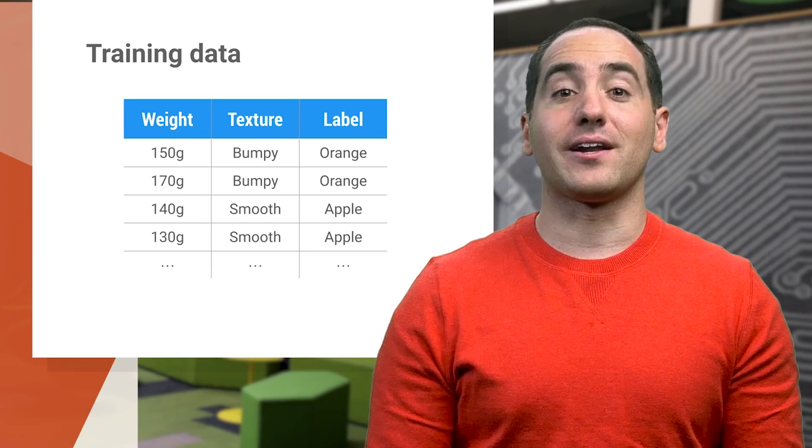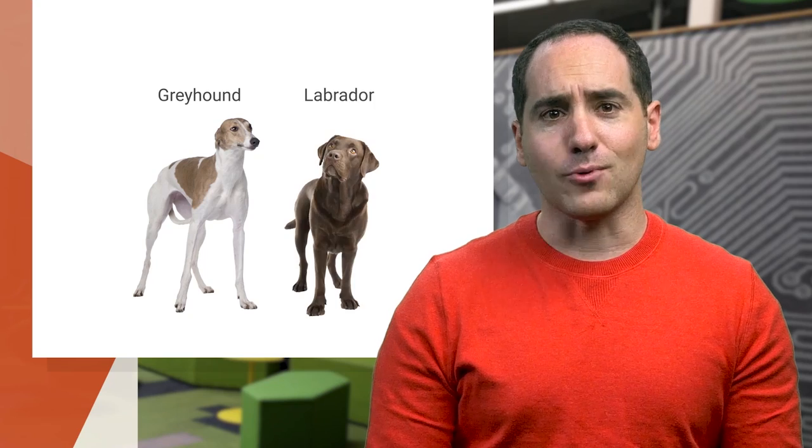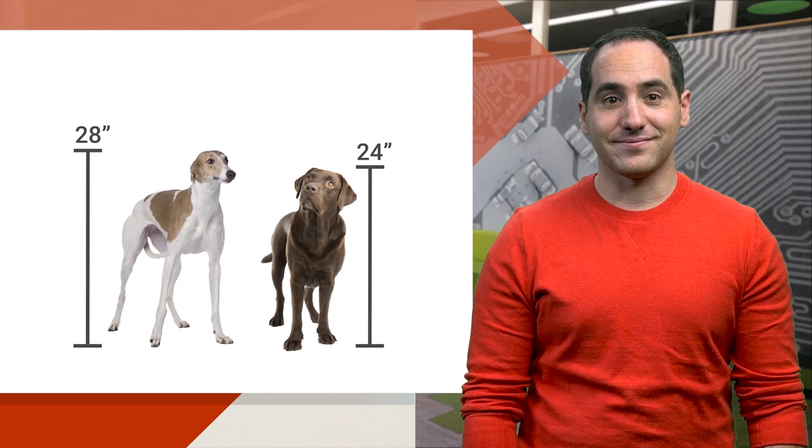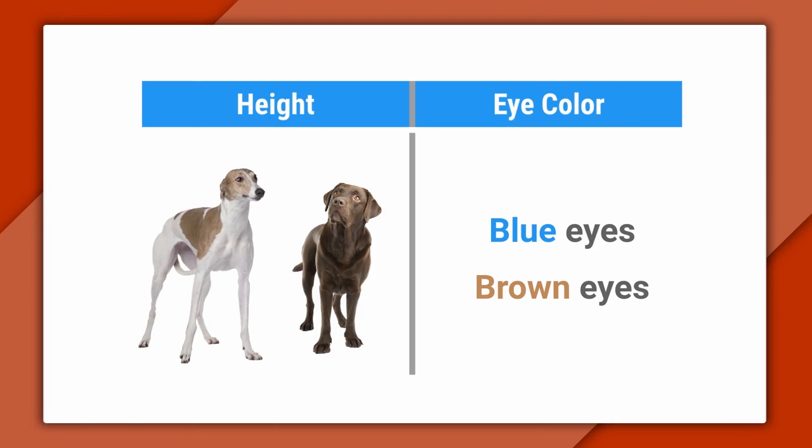For example, imagine we wanted to write a classifier to tell the difference between two types of dogs: greyhounds and labradors. Here we'll use two features, the dog's height in inches and their eye color. Just for this toy example, let's make a couple assumptions about dogs to keep things simple.